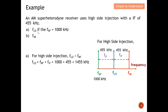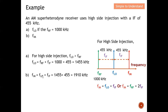The question also asks for the image frequency. Using the formula for high side injection: image frequency = FLO + FIF = 1455 kHz + 455 kHz = 1910 kHz. Alternatively, you could use FRF + 2×FIF to get the same result.